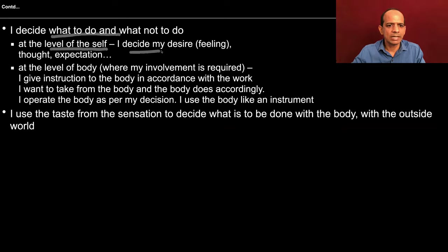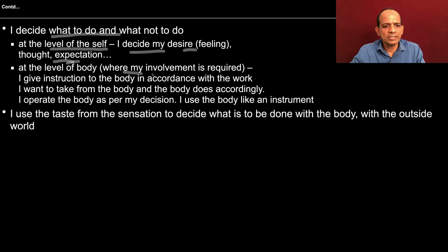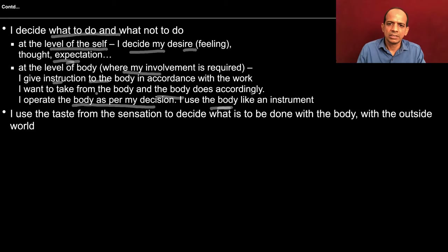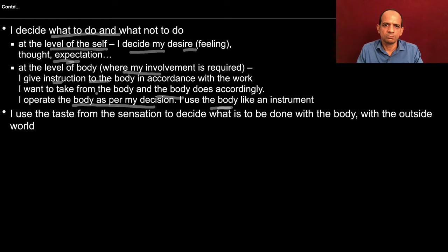At the level of the self, I decide my desire — that is, feeling, thought, and expectation — which we explored in the previous exercise. At the level of the body, where my involvement is required, I give instruction to the body in accordance with the work I want to take from it, and the body acts accordingly. I operate the body as per my decision and use the body like an instrument.